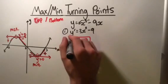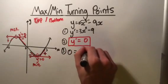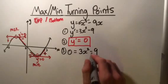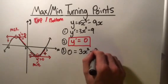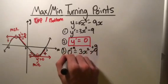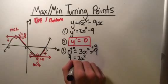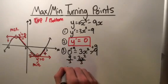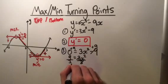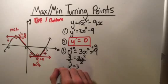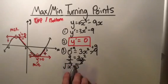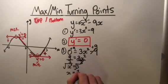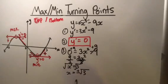Step three: put zero where y dash is, so zero equals 3x squared minus 9, and then we solve this equation. We take 9 to the other side to get 9 equals 3x squared, then divide both sides by 3 to get x squared equals 3. Then taking the square root of both sides — remember to use plus or minus — we get x equals plus or minus root 3. The reason we use plus and minus is because negative root 3, when squared, also comes out as 3.